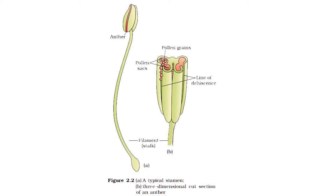The wall layers from periphery to center consist of four layers. The first is a single layer of epidermis, which becomes stressed and shriveled off at maturity. The second layer is the endothecium; the cells of endothecium possess fibrous thickening. Some cells remain thin-walled and constitute the stomium or line of dehiscence — the region where the anther ruptures. When the anther matures and becomes dehydrated, it splits along the line of dehiscence, also called the line of rupture, and the pollen grains are released.